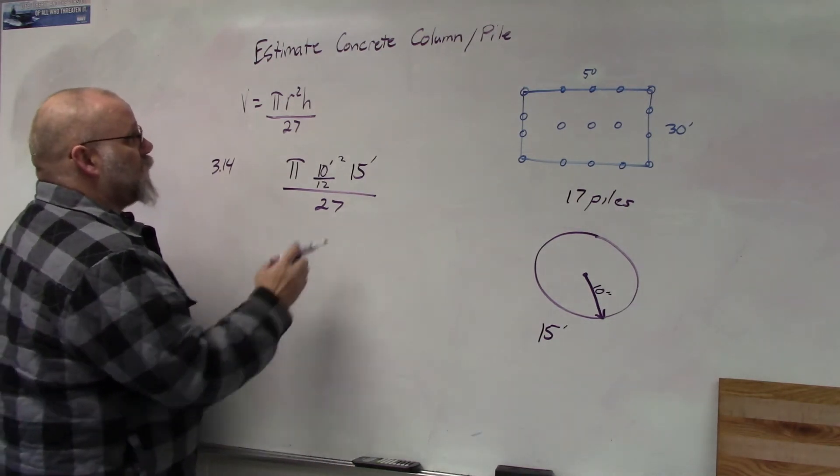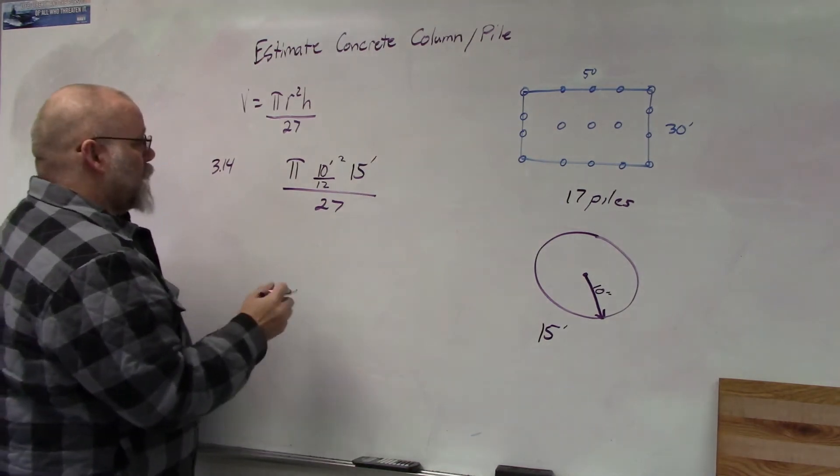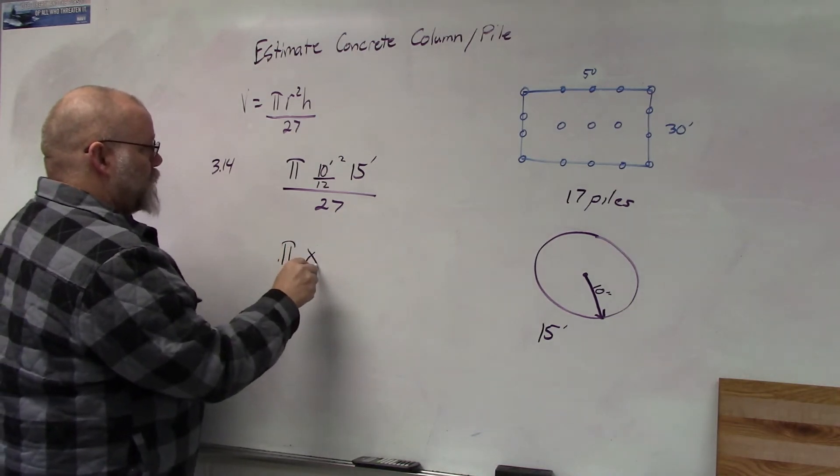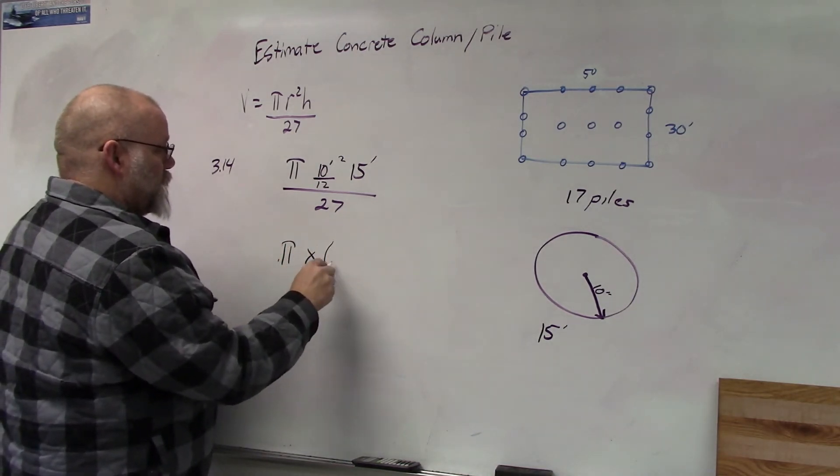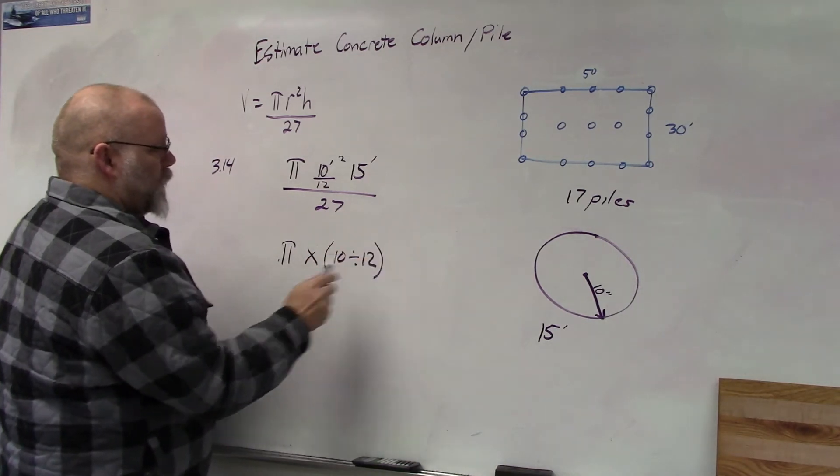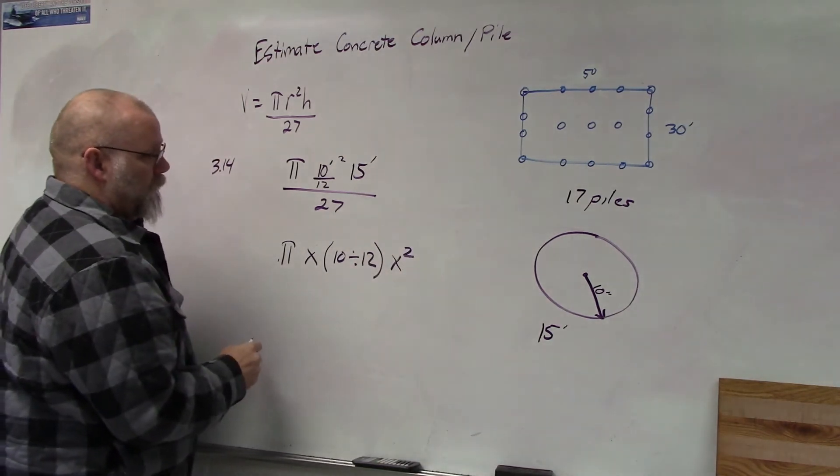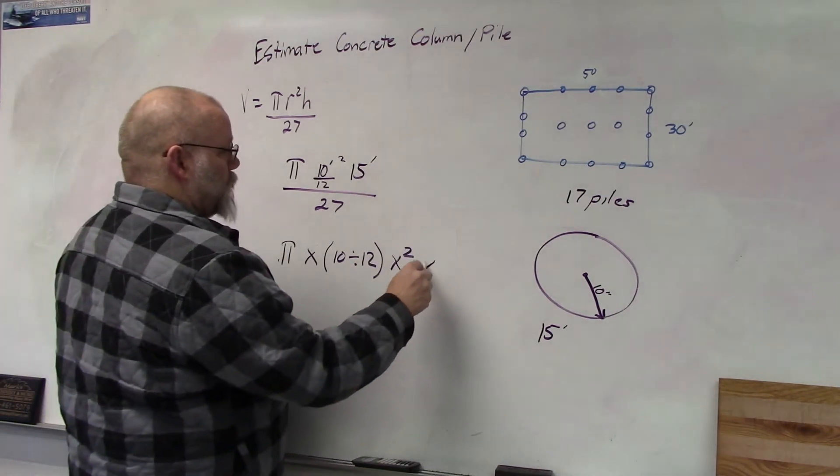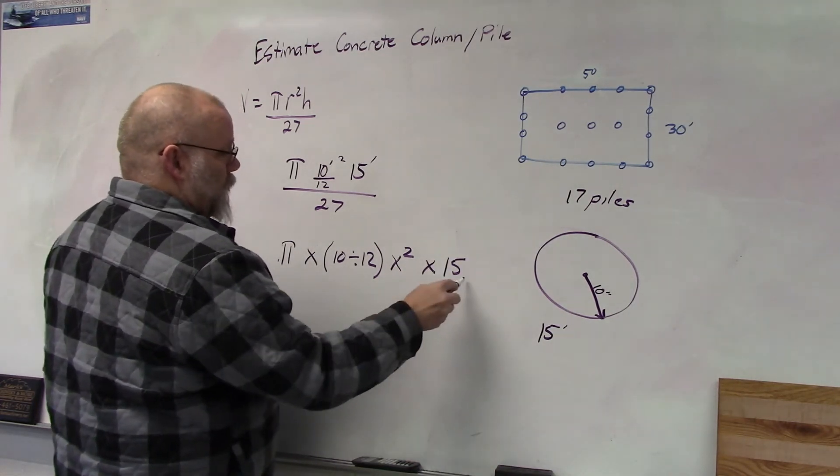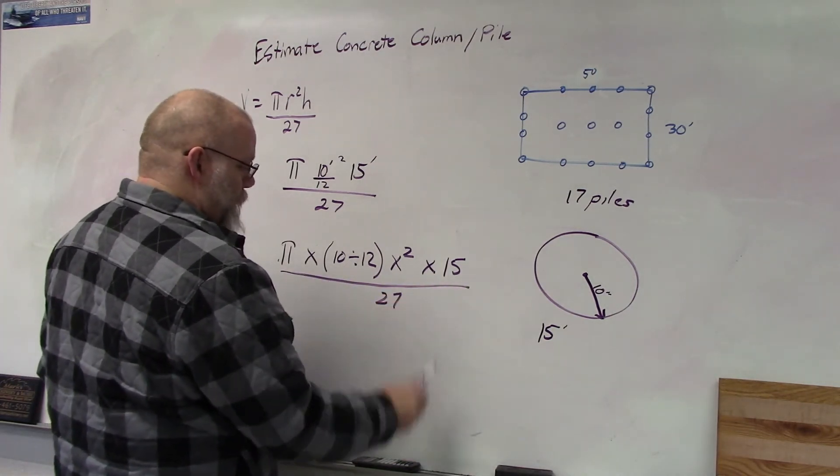So using our TI-30XA calculator, we're going to take pi times, then we're going to do the parentheses, 10 divided by 12, parentheses, then we're going to square that number, then we're going to multiply it times 15, and then we're going to divide the whole thing by 27.